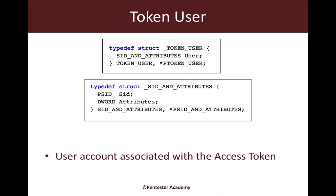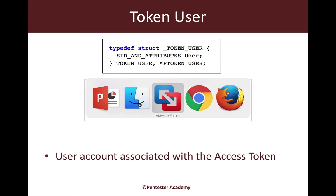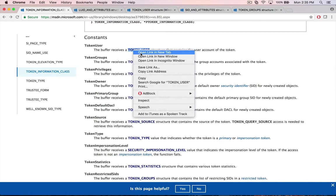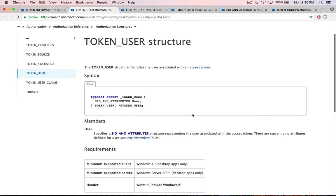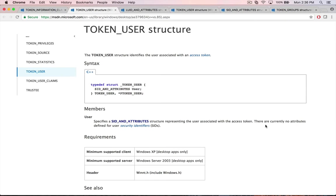The first thing we mined was the token user — basically the user account associated with the access token of the process. The token user structure contains a SID_AND_ATTRIBUTES structure, which is a pointer to a SID and a DWORD for attributes. According to the documentation, attributes are left blank for the token user structure — there are currently no attributes defined for user SIDs. So all we are interested in is getting the SID and converting it into something readable.